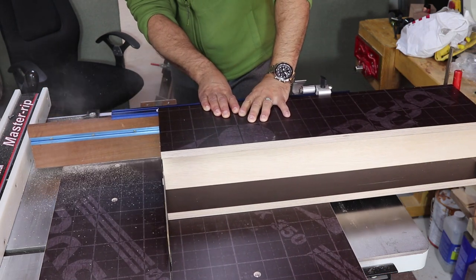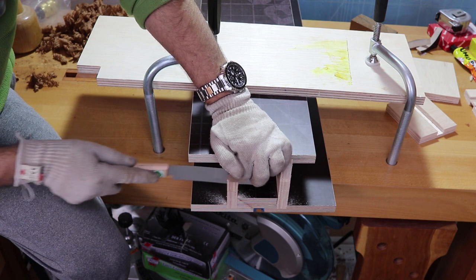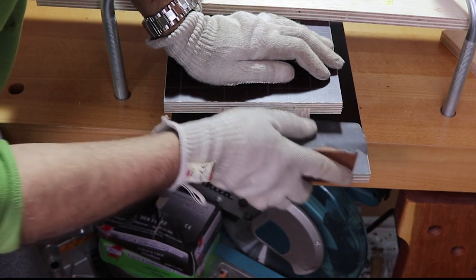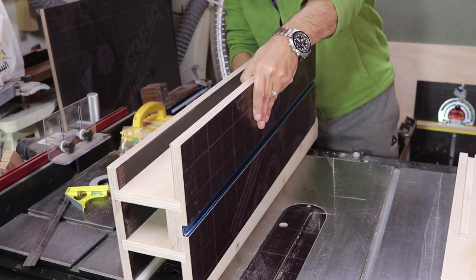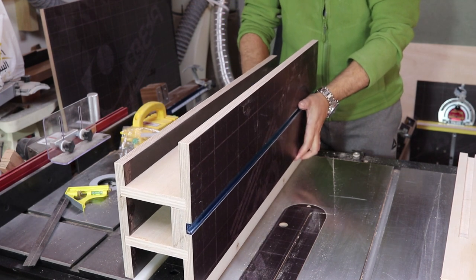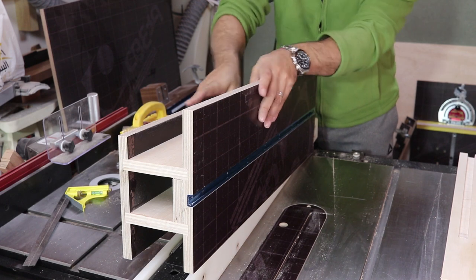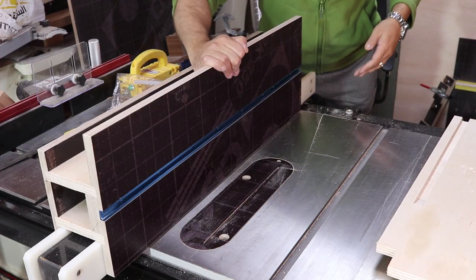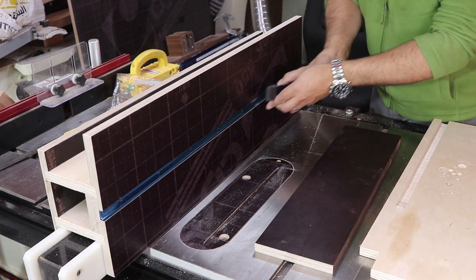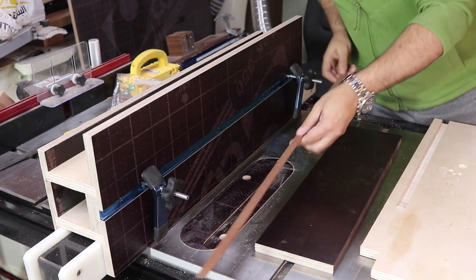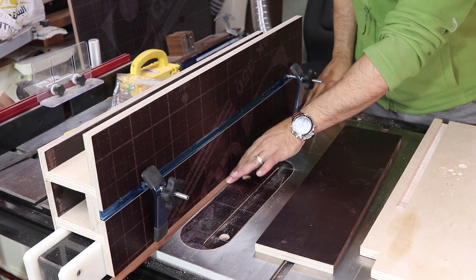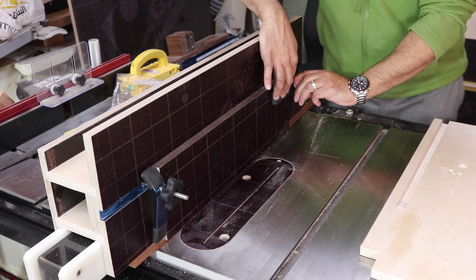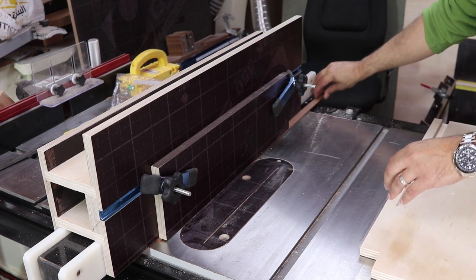You can trim any excess material on the front and the back of the fence if you wish. I would consider this as a cosmetic addition, not a functional one. Now let's test the new fence. I will add this sacrificial board for making rabbet cuts and will use a strip of wood to raise the board by one eighth of an inch to allow for the sawdust to escape and avoid it building up between the fence and the cutting piece.